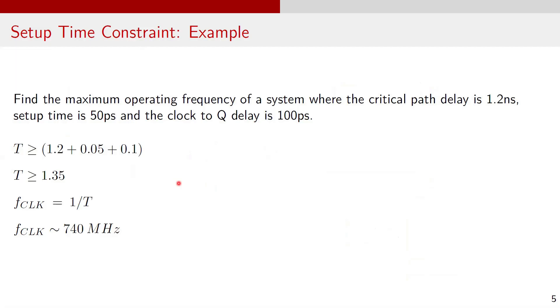Now let's apply the setup time constraint in an example. Suppose we have to find out the maximum operating frequency of a system where the critical path delay, that is t PD logic, is 1.2 nanosecond, setup time is 50 picosecond, and clock-to-Q is 100 picosecond. Using the setup constraint equation, time period t must be greater than or equal to 1.2 plus 0.05 plus 0.1, which gives the maximum operating frequency of this design as 740 megahertz.